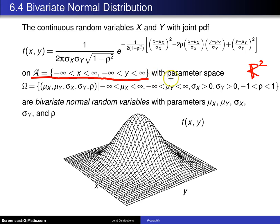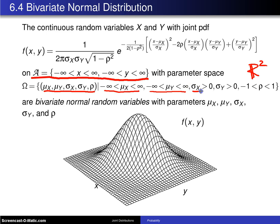The parameter space omega involves five parameters. Mu sub X is the mean of X, mu sub Y is the mean of Y, sigma sub X is the standard deviation of X, sigma sub Y is the standard deviation of Y, and rho is the correlation. The means can be any real value, the standard deviations are strictly greater than zero, and the correlation lies between negative one and positive one, not including the endpoints.